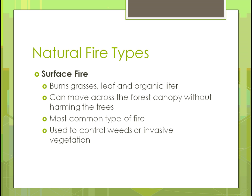Looking at surface fires, basically all it does is burn the grasses, any leaves that are there, any organic litter. Like if you had a cornfield with residue on top, it would burn that off and that'd be it. It pretty much moves across the canopy without harming any trees because it's so fast moving. It's the most common type of fire, and sometimes it's set by humans to control weeds or invasive vegetation. A lot of prairie burns are done to control unwanted plants — it's the simplest way to get rid of them.